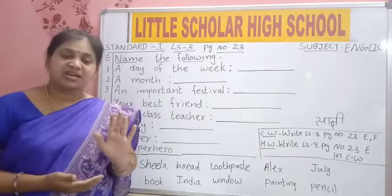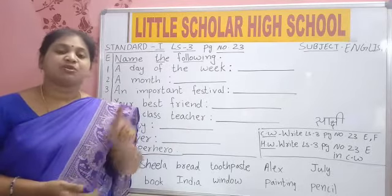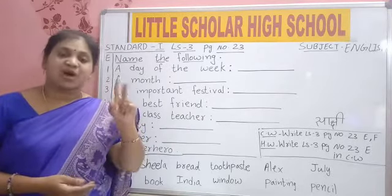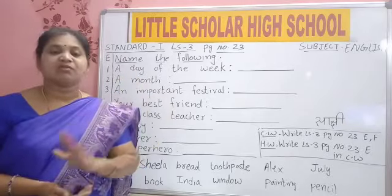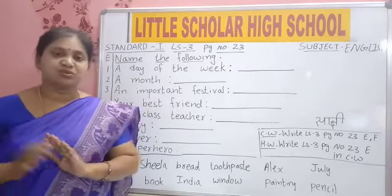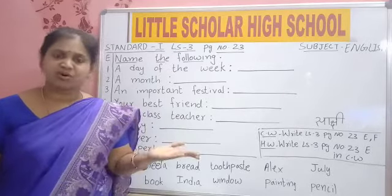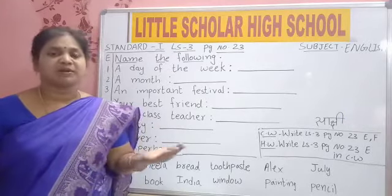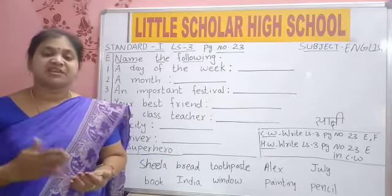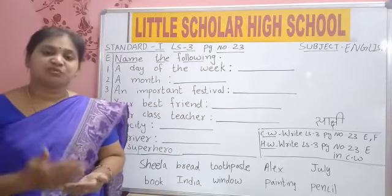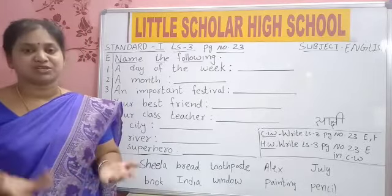What is a special name? Special name means it is used for only one person, one place, one animal, one thing. If we say 'boy is going to school', boy is a common name — all boys are called boys. But if I say 'Ravi is going to school', then Ravi is the name of one boy only, so it is special.